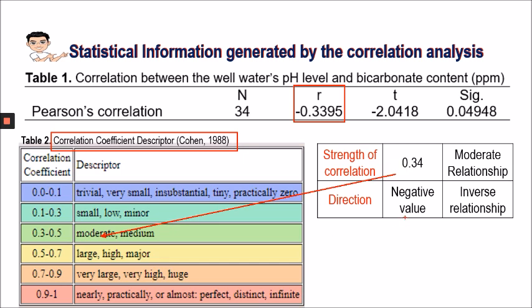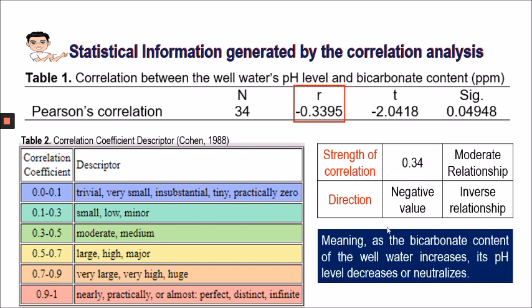The negative value tells us about the direction of the relationship, which in this case is an inverse relationship. So we may say that as the bicarbonate content of the well water increases, its pH level decreases or neutralizes.